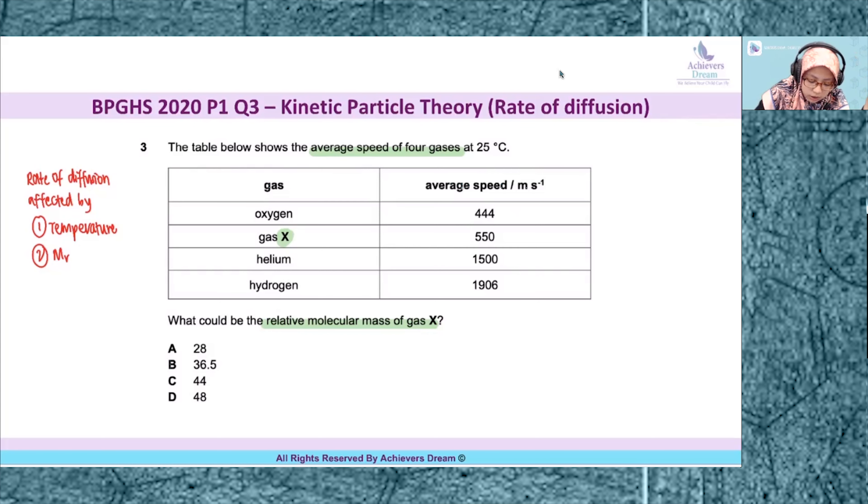We have oxygen, X, helium, and hydrogen. Let me write down the Mr of oxygen O2, which is 2 times 16, you'll get 32. Helium is a noble gas so I'll write Ar instead. Ar of helium is 4. Mr of hydrogen, 2 times 1, equals 2.